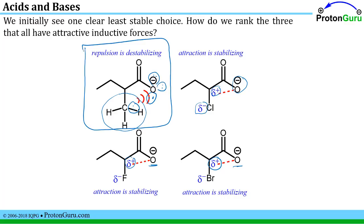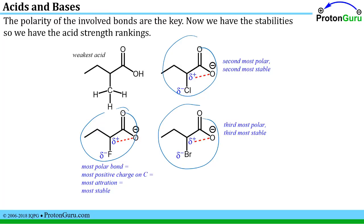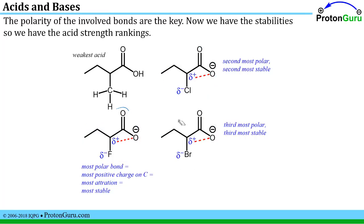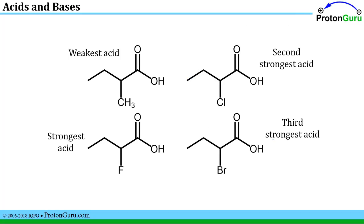Among the three species with attractive inductive forces, we determine which attraction is greatest. The most polar bond — carbon-fluorine — induces the most positive charge on the adjacent carbon, creating the greatest attraction to the negative charge, giving the most stable conjugate base and the strongest acid. Chlorine is the next most electronegative, so it provides the second most polar bond, second most positive charge, second most attraction, and second most stability. Bromine is less electronegative than chlorine, inducing less positive charge, so it ranks third. This gives us our full ranking from strongest to weakest acid.